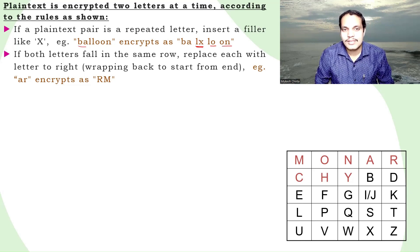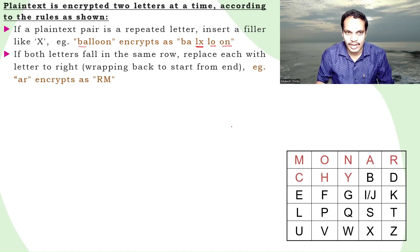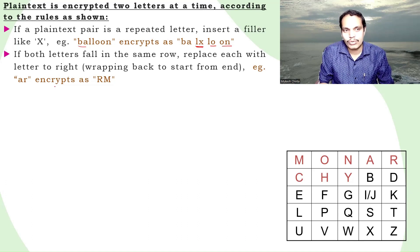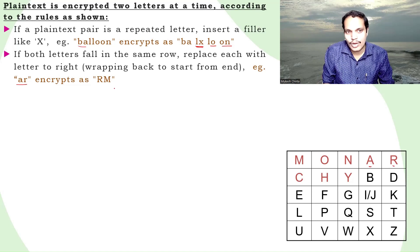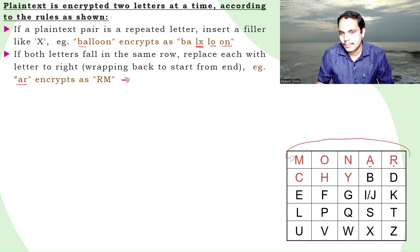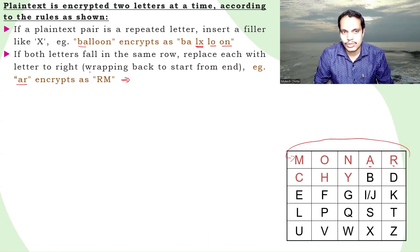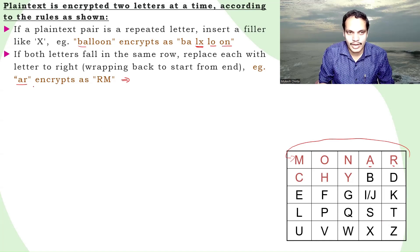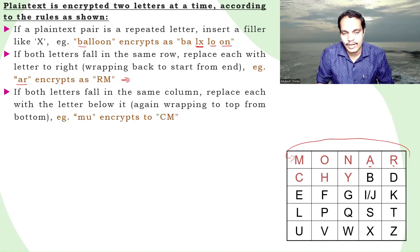The second rule: if both letters of a pair fall in the same row of the 5x5 matrix, replace each with the letter to its right, wrapping around if necessary. For example, A and R are both in the first row. A is replaced with R, and R wraps around to be replaced with M. So A-R encrypts to R-M. Similarly, O-N encrypts to N-A, since each shifts one position to the right.